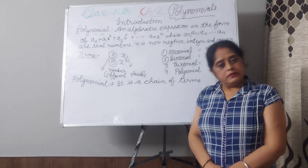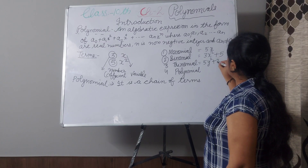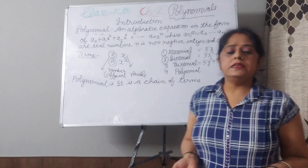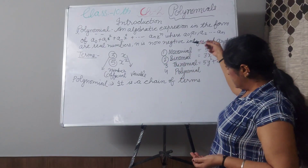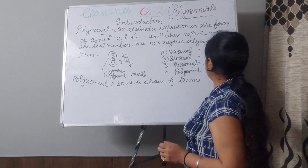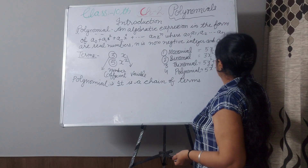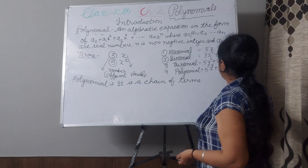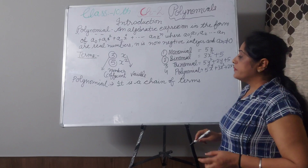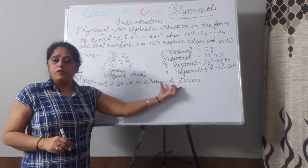A trinomial has 3 terms, for example 5y² plus 2y plus 5. A polynomial has more than 3 terms — but actually monomial, binomial, and trinomial are also polynomials. The word polynomial means a chain of many terms, for example 5x⁴ plus 3x² plus 2x plus 1.